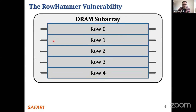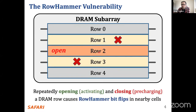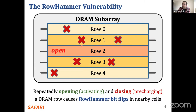Now let's talk about row hammer. You access DRAM cells in row granularity. Say we want to access row 2 — to do so you open row 2, and once done you close it. If you keep doing this many times in a short amount of time, you observe bit flips in adjacent rows. If you keep doing it many more times, the number of bit flips increases and they spread across more rows as well.